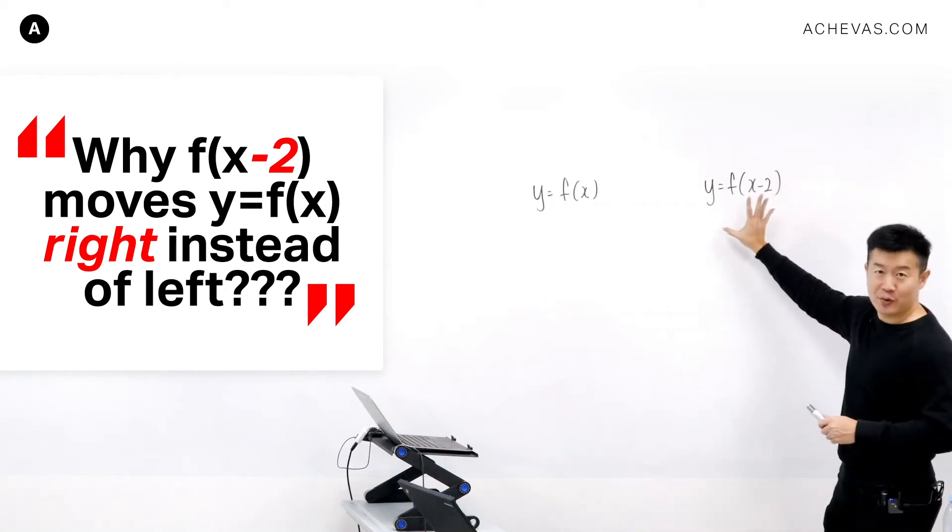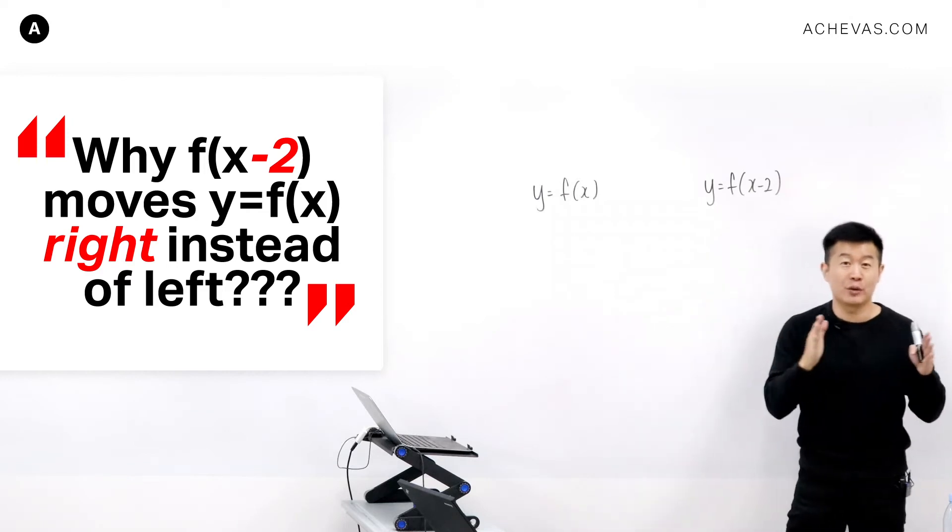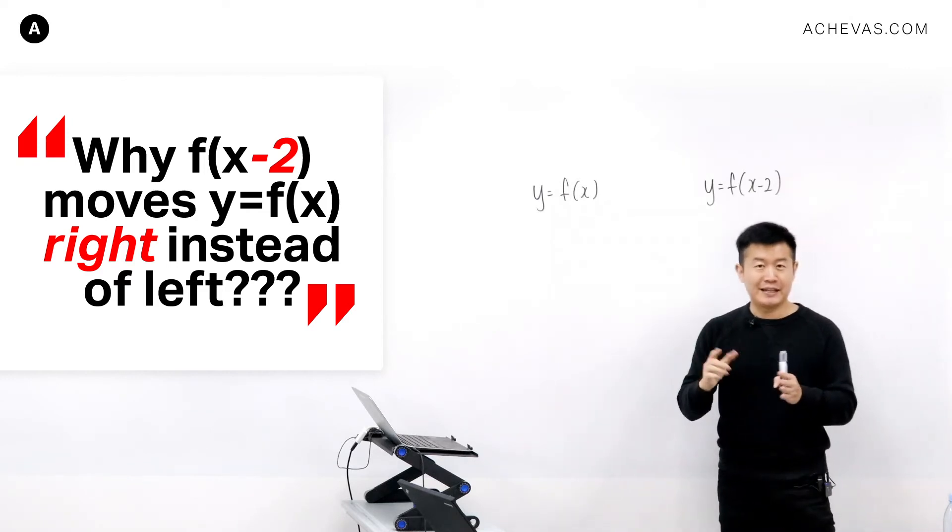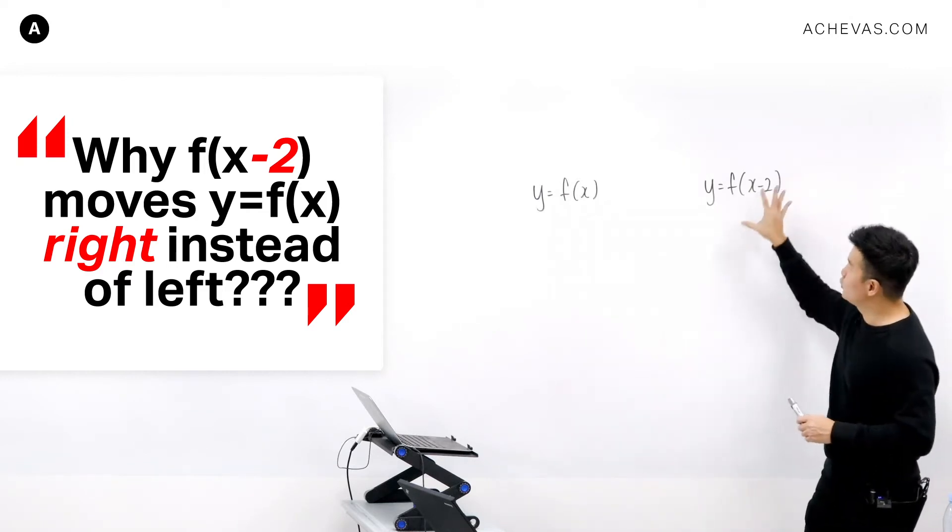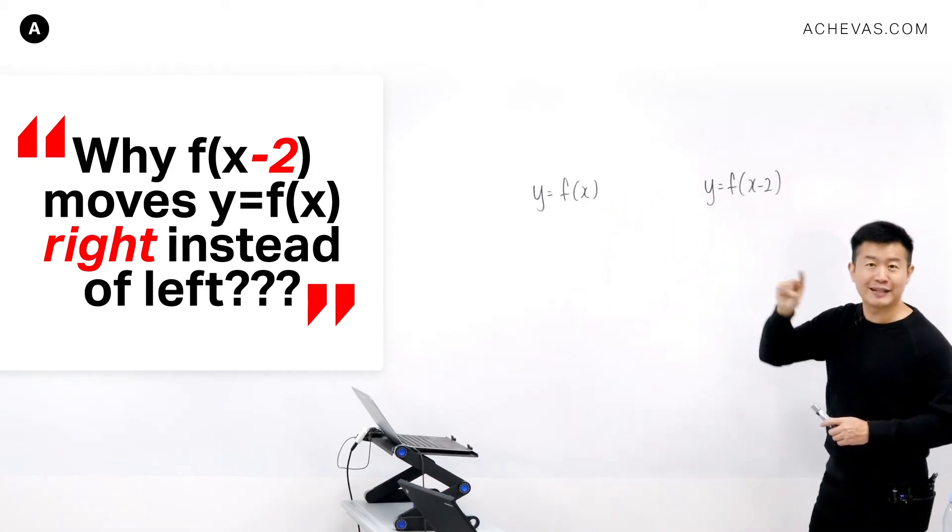Why is it that when I try to get this transformed graph, it is taking the original graph and translating it by 2 units to the right instead of to the left? This can be very easily explained if you were to look at the similarity between these two graphs, and the similarity is the function f.